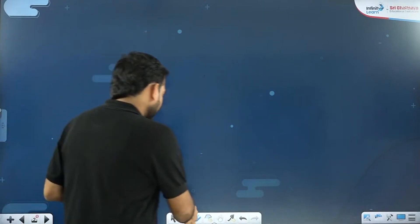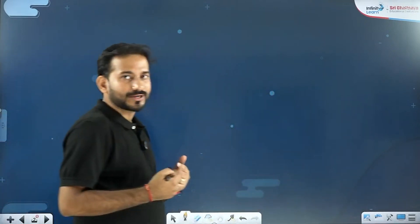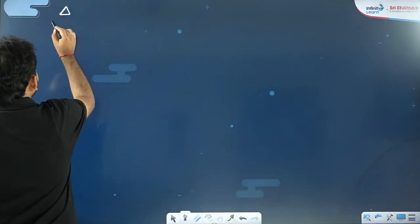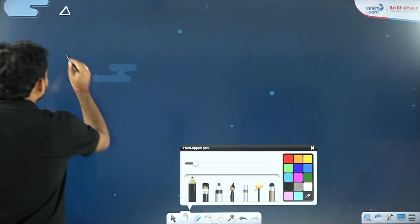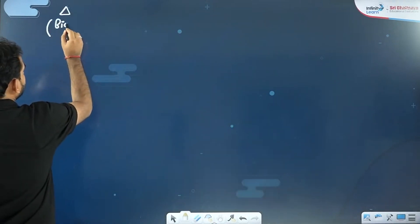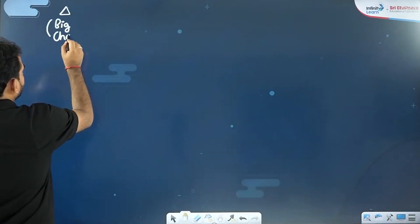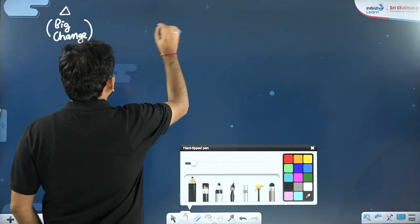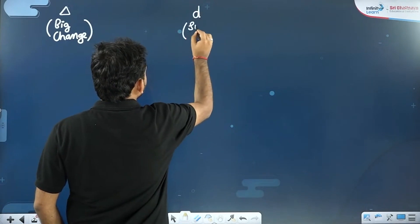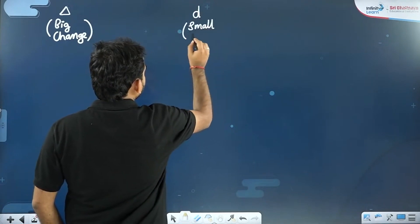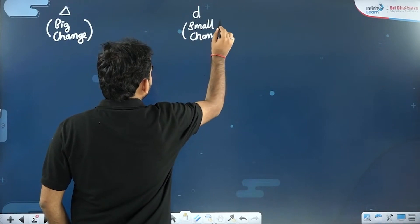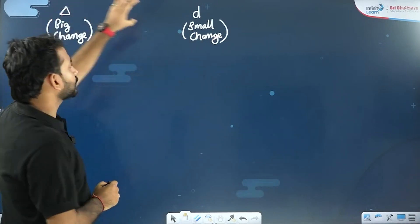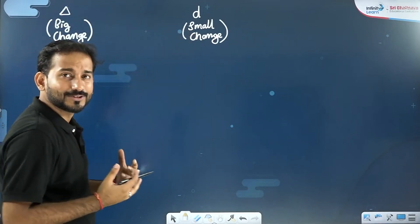The first thing regarding integration — I have been telling you since the last two days and I would like to repeat it once again. Whenever you want to talk about a big change, delta denotes big change. Whenever you want to talk about a small change, d denotes small change. If you want to convert the big change into a small change, you make use of differentiation.